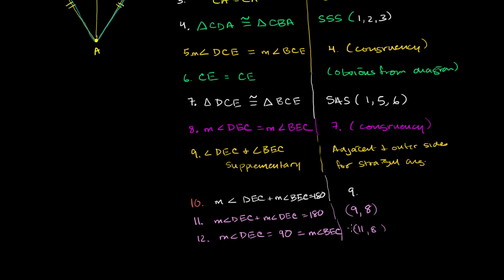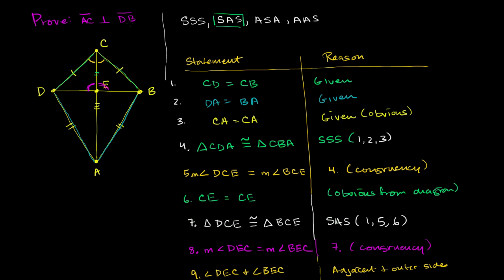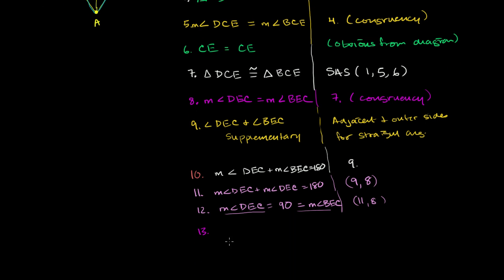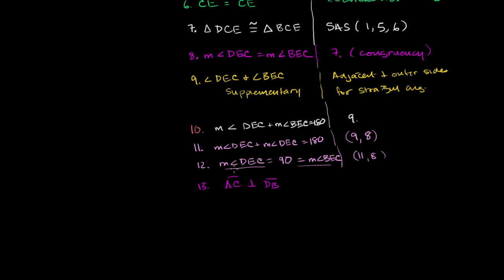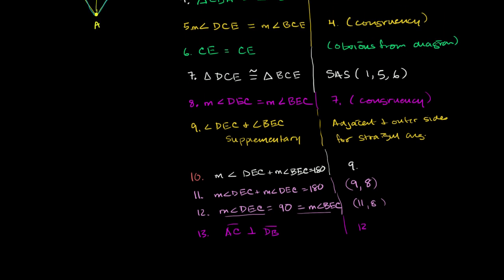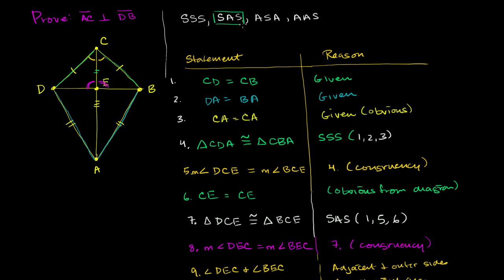Since both angles are 90 degrees, statement 13 — which is what we wanted to prove — AC is perpendicular to DB. This comes straight from statement 12. We've completed a two-column proof and proven that this line segment is perpendicular to that line segment, using both the SSS postulate and the side-angle-side postulate.